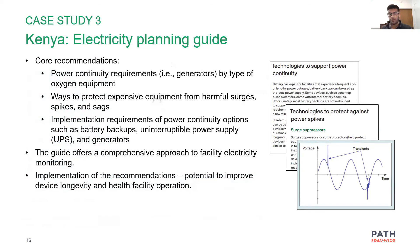Key recommendations from the Kenya example include ensuring that facilities have power continuity. The guide goes in depth on different power continuity options — generators are a great example. There are also uninterrupted power supply (UPS) devices, especially important in the oxygen context when patients reliant on a concentrator or on-site PSA plant cannot have their oxygen supply interrupted by an outage. Voltage protection and surge protection devices are also critical to ensuring equipment isn't damaged when grid power cuts out. This guide provides a comprehensive approach to facility electricity monitoring and implementing recommendations to ensure devices can continue to be used effectively.